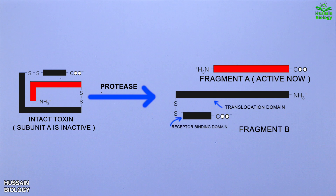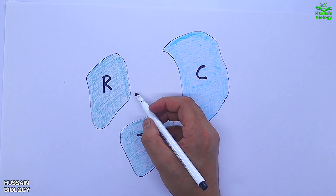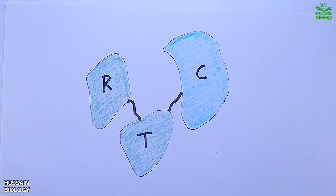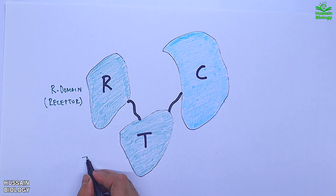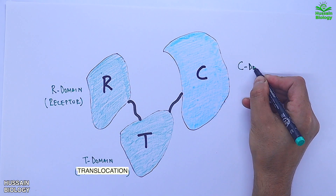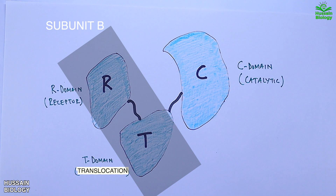Now let's see the 3D structure of diphtheria toxin. There are three structural domains depicted as R, C, and T domains. The R domain is the receptor domain, the T domain is the translocation domain, and the C domain is the catalytic domain. The R and T domains together make up subunit B of the toxin.